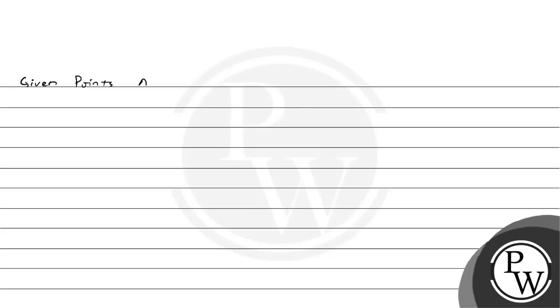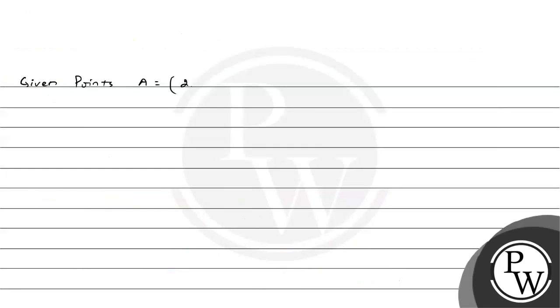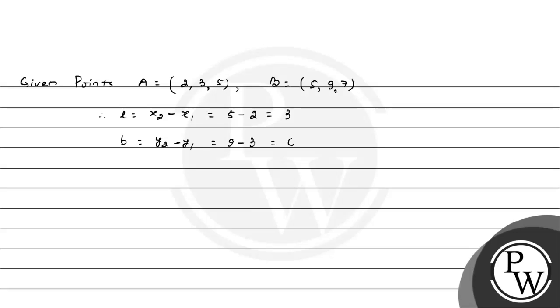We are given points through which the parallelepiped is drawn parallel to the coordinate planes: let point A be (2,3,5) and point B be (5,9,7). Therefore, L = x2 − x1 = 5 − 2 = 3, and b = y2 − y1 = 9 − 3 = 6.